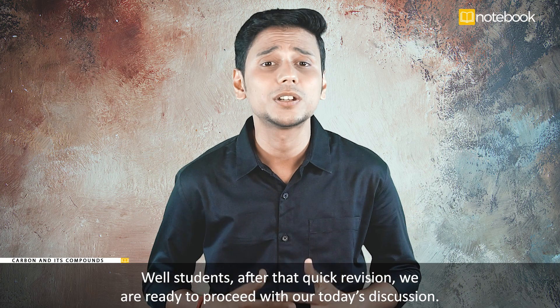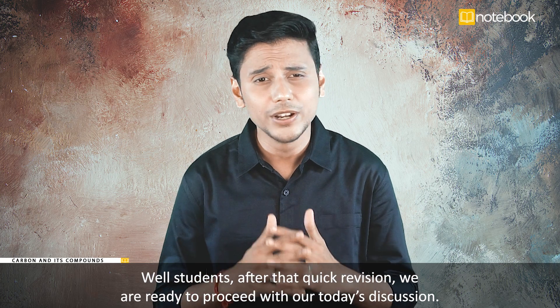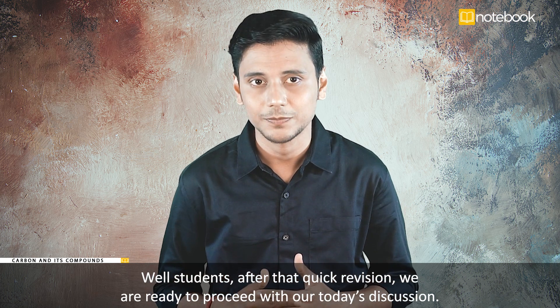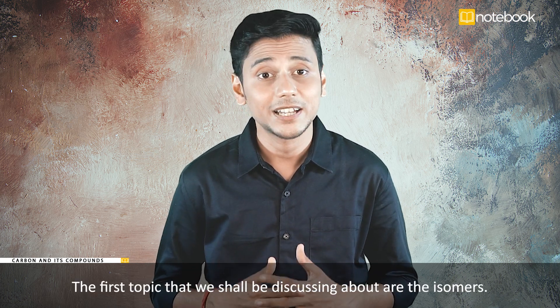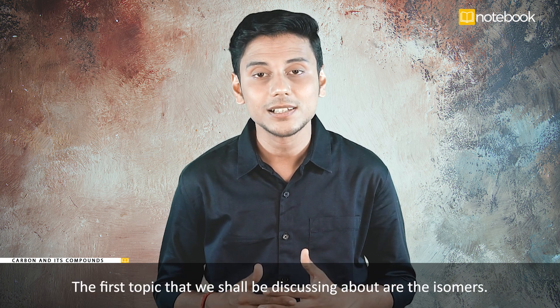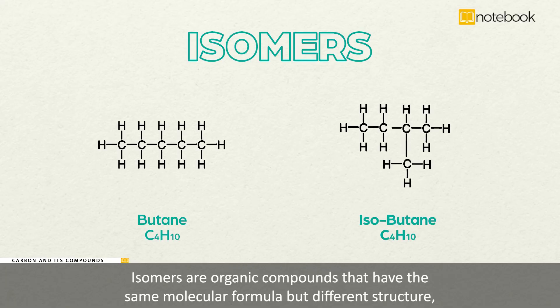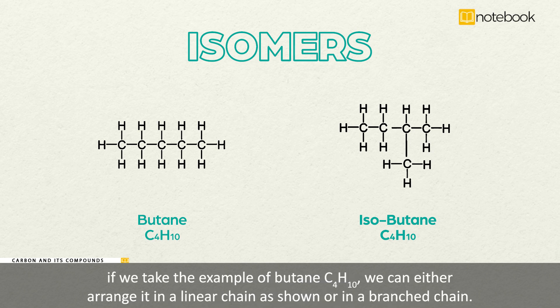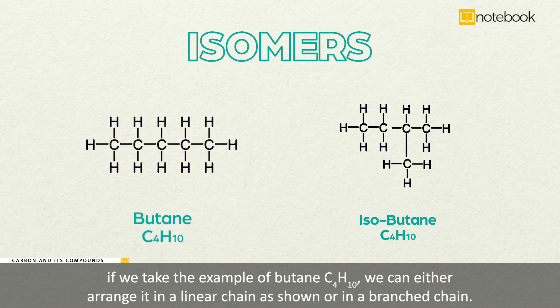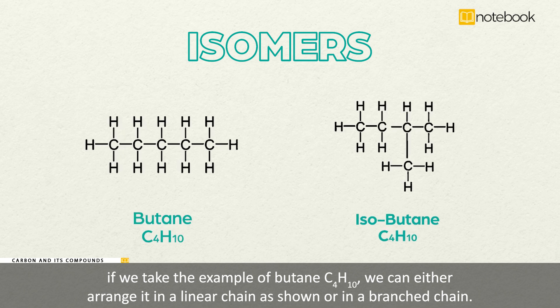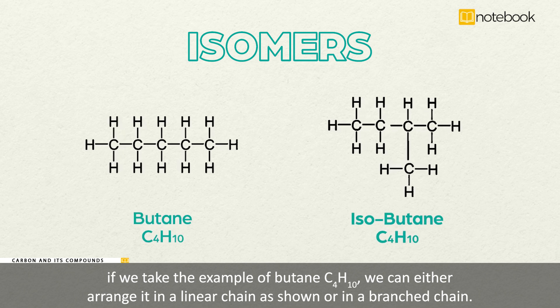After that quick revision, we are ready to proceed with our today's discussion. The first topic that we shall be discussing about are the isomers. Isomers are organic compounds that have the same molecular formula but different structure. If we take the example of butane, C4H10, we can either arrange it in a linear chain as shown or in a branched chain.